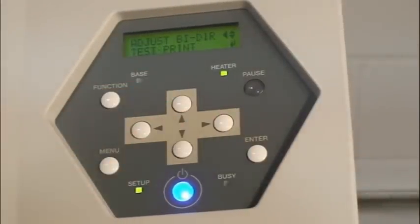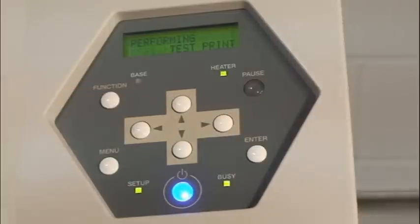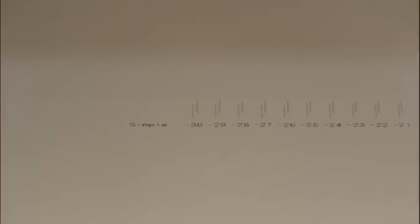Press the right arrow key once followed by the enter button to do a bidirectional adjustment test print. This print displays the machine's current type of bidirectional settings. Detail settings will also be adjusted later on.